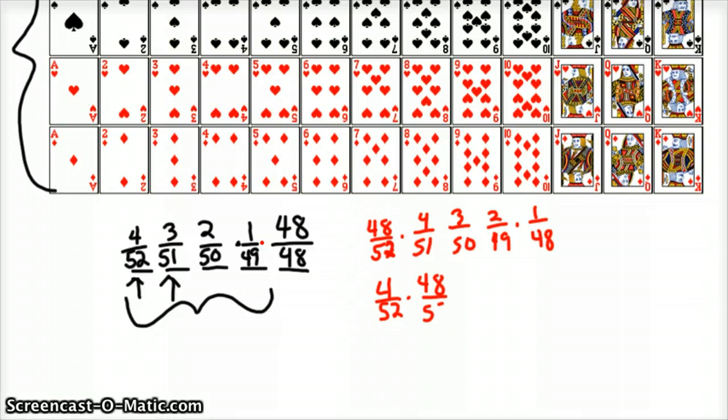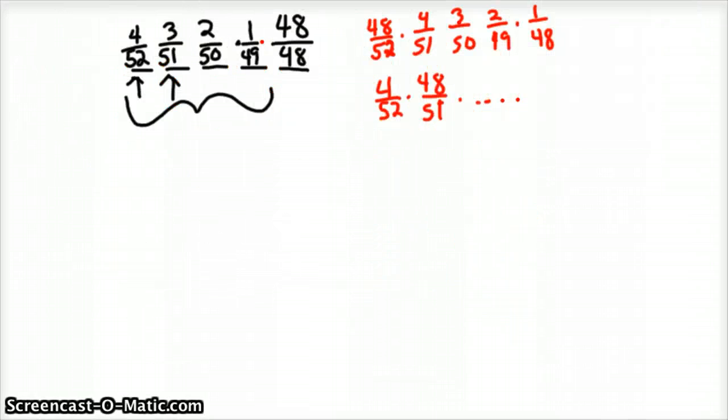Maybe your first card was an ace and your second card was not the ace. And so we've got something that looks like this on down the line.